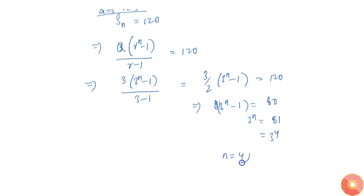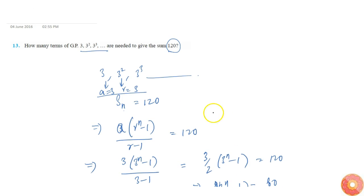That implies n equals 4. Therefore, 4 terms are required to give the sum 120.